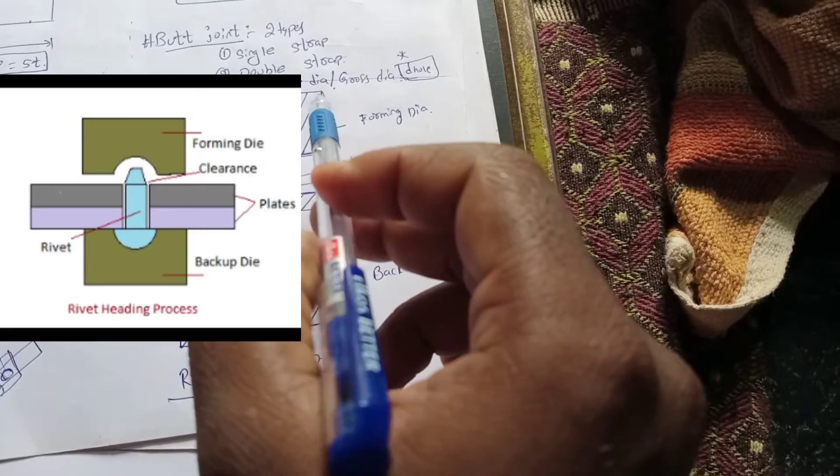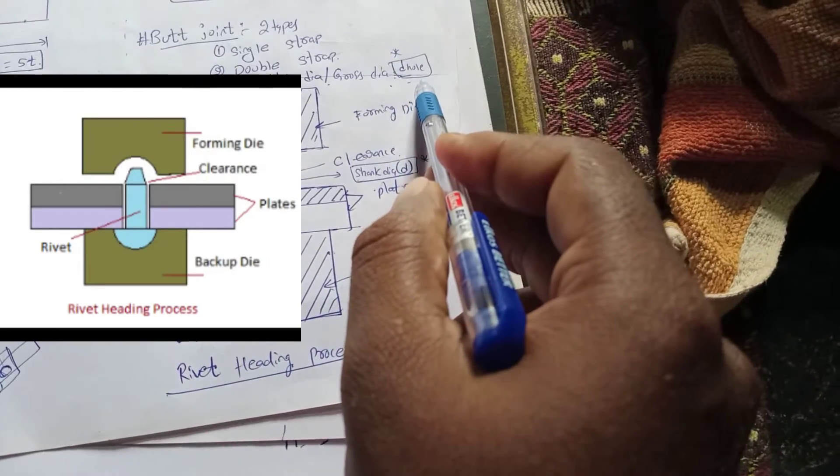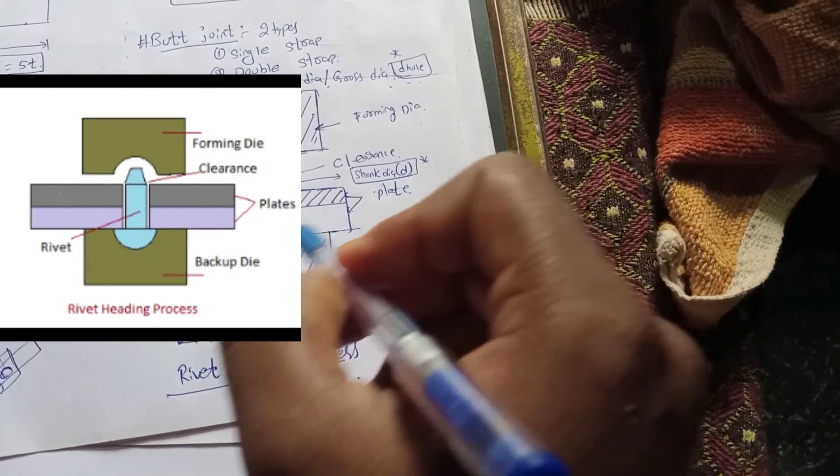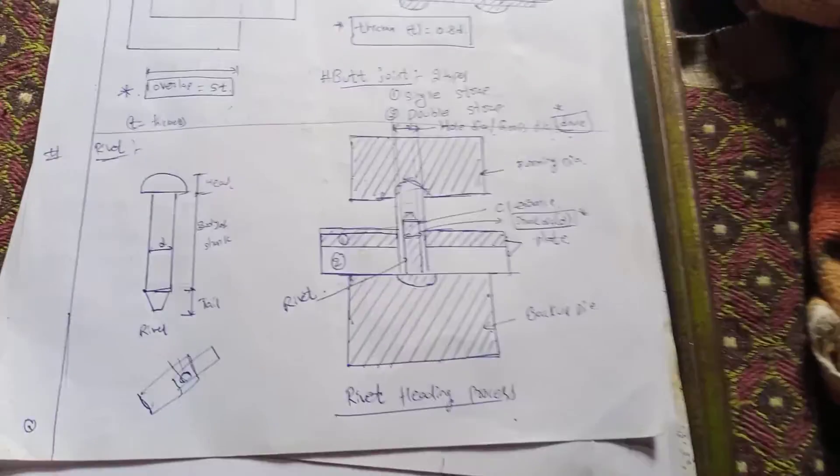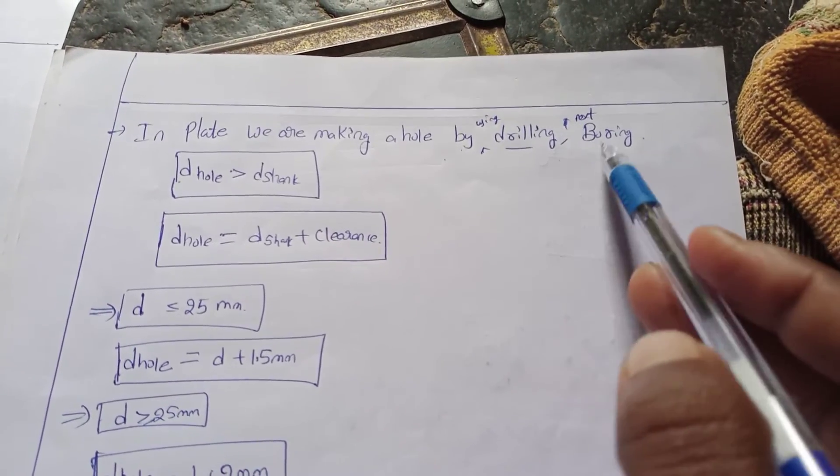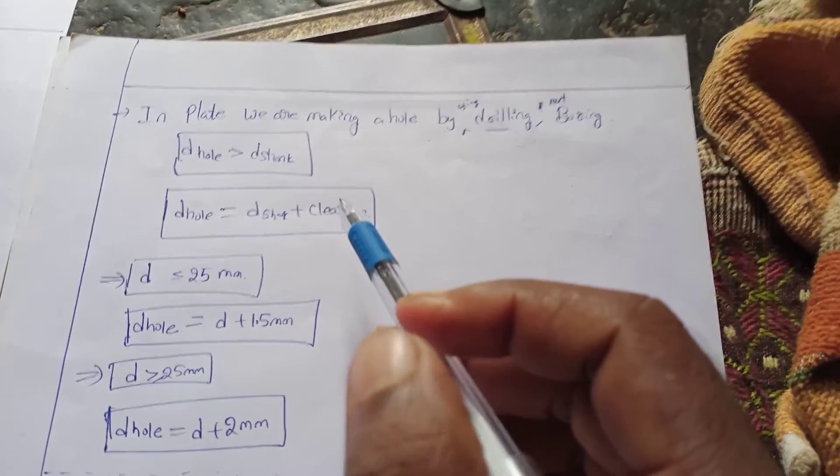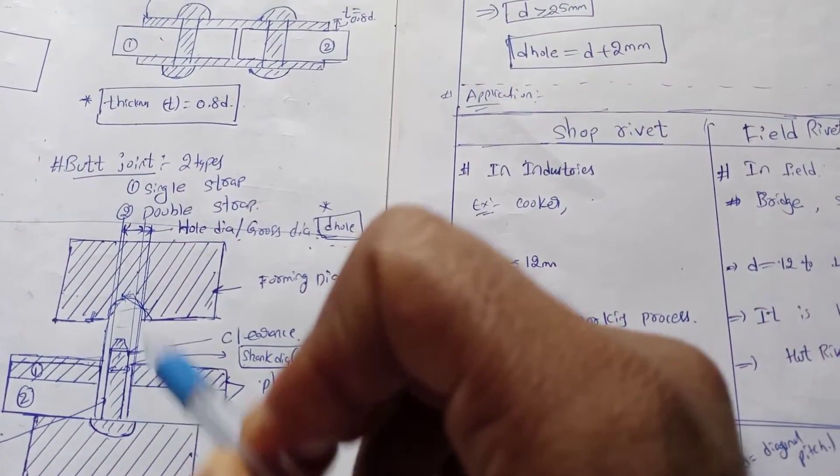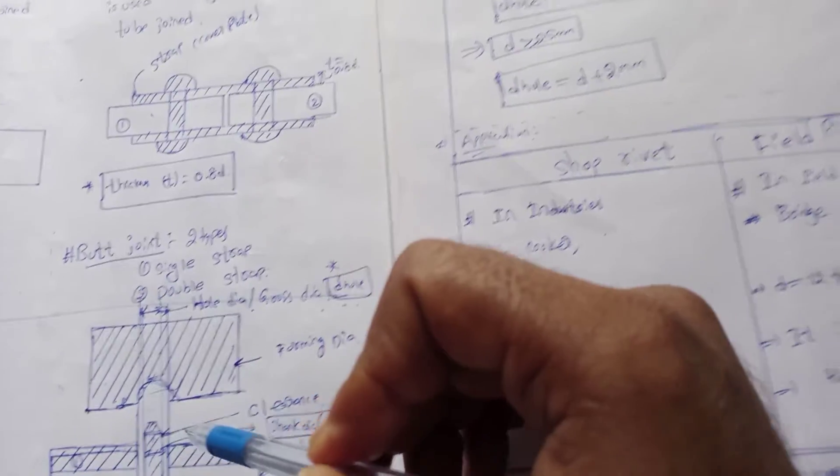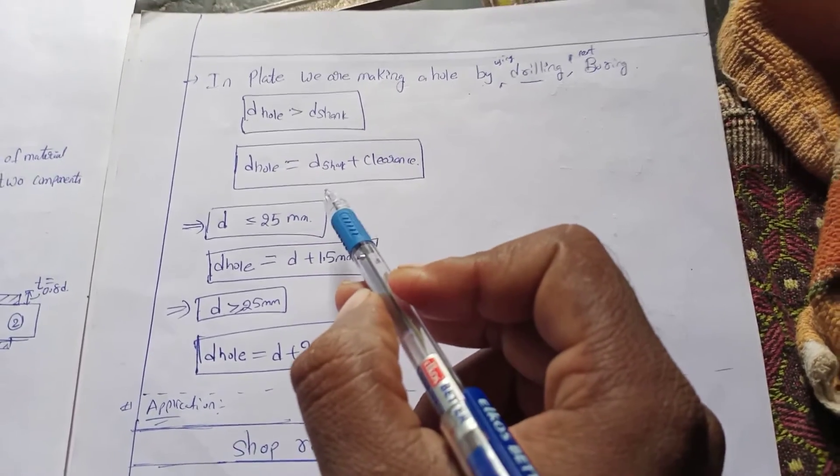Next, these are the terms. For the plate, there's hole diameter or gross diameter - this is D. There's clearance or shank diameter. The drilling hole equals shank diameter plus clearance.